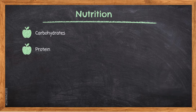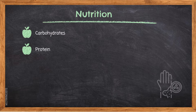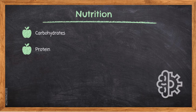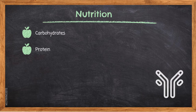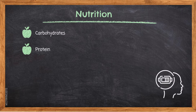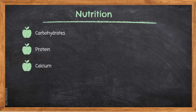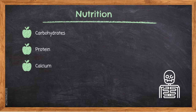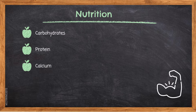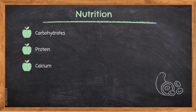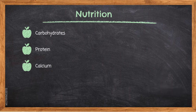Protein is essential for building muscle, repairing all types of body tissue, regulating body processes, forming antibodies to fight infection, and supplying your body with energy. Calcium is responsible for forming strong bones and teeth, maintaining and repairing the skeleton, maintaining muscle tone, normal heartbeat, and healthy nerve functions, and aiding normal blood clotting.